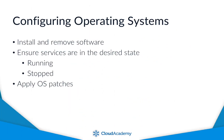If you're using virtual machines, then you'll likely need to be configuring the operating system of those VMs. And that's another area that Ansible can help with — it allows you to specify the state that services and settings should be in, and it takes care of making sure that happens. For example, you could ensure that the Apache 2 service is running, or ensure that a service such as Telnet is not running.